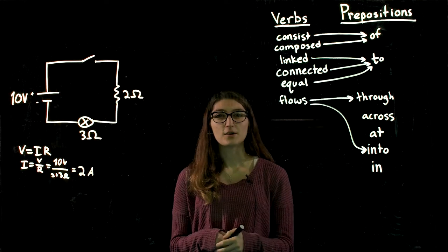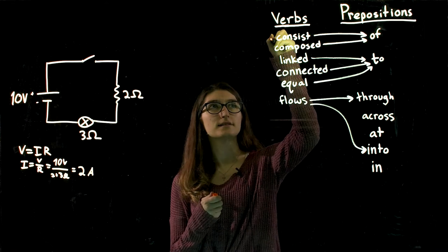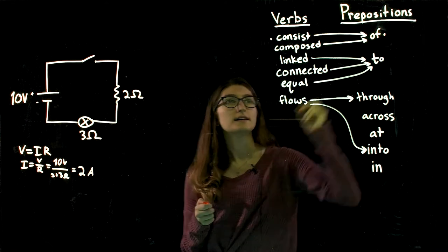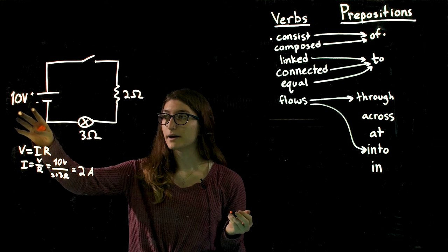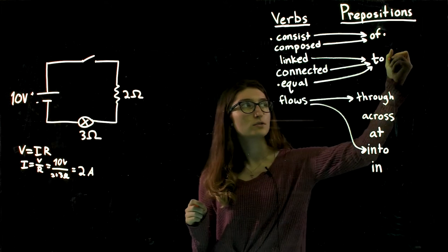Alright, so this circuit consists of four elements and it starts with the battery. The battery has a voltage equal to 10 volts.